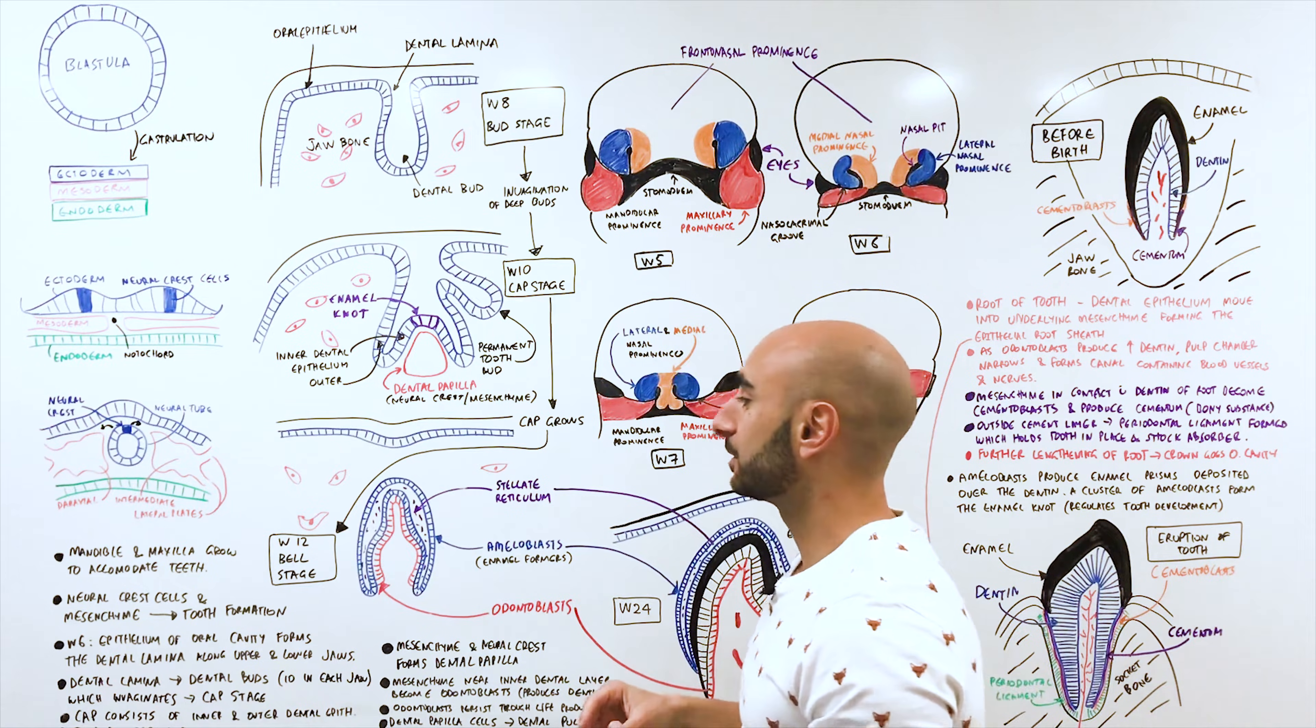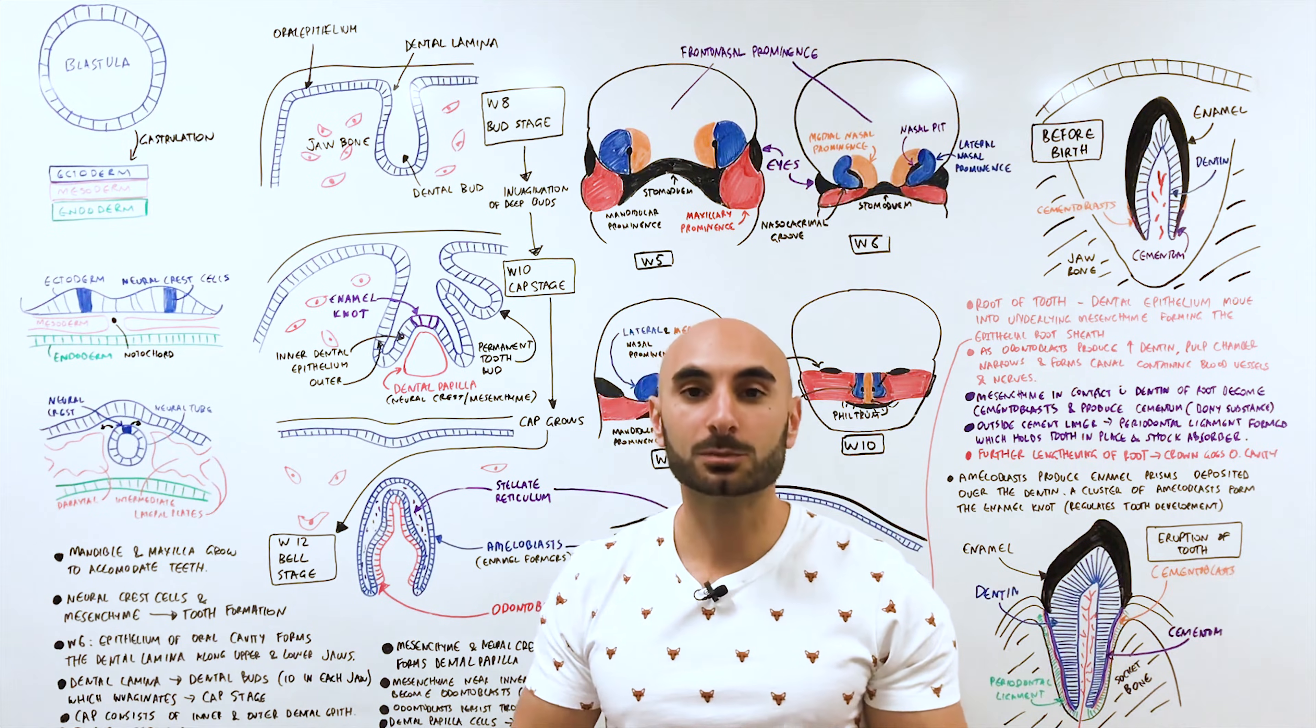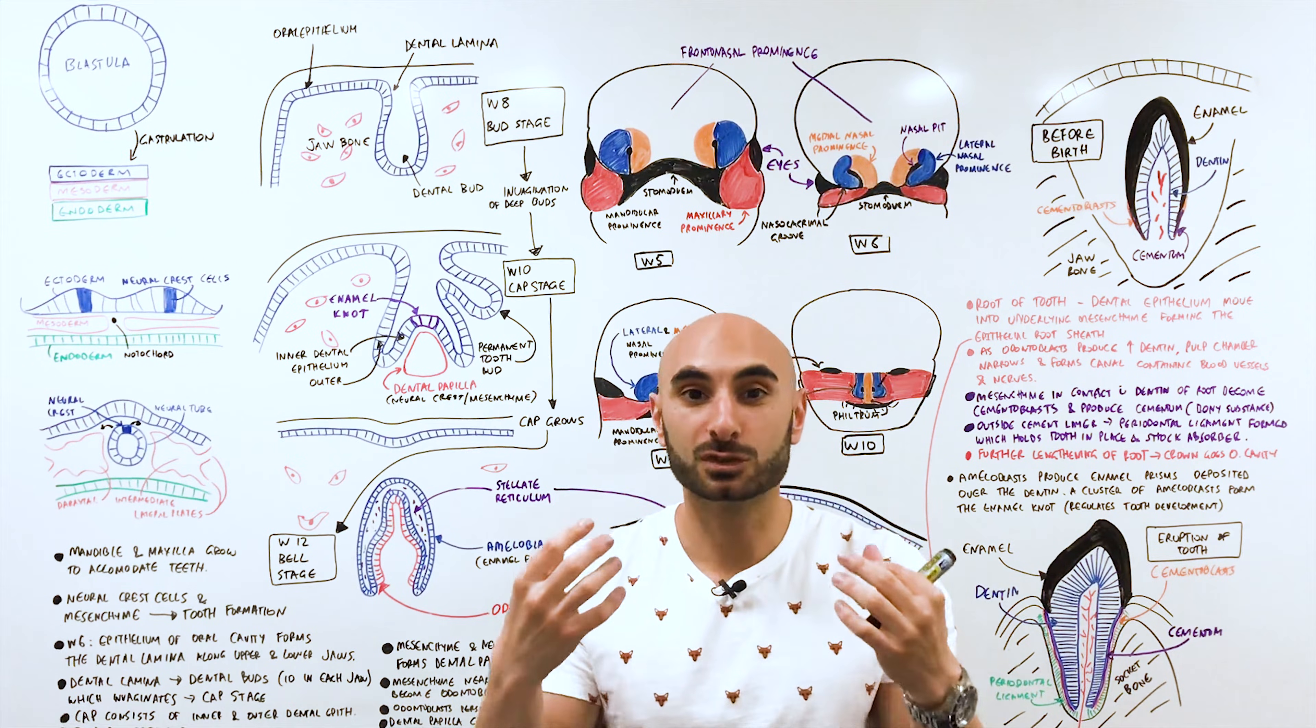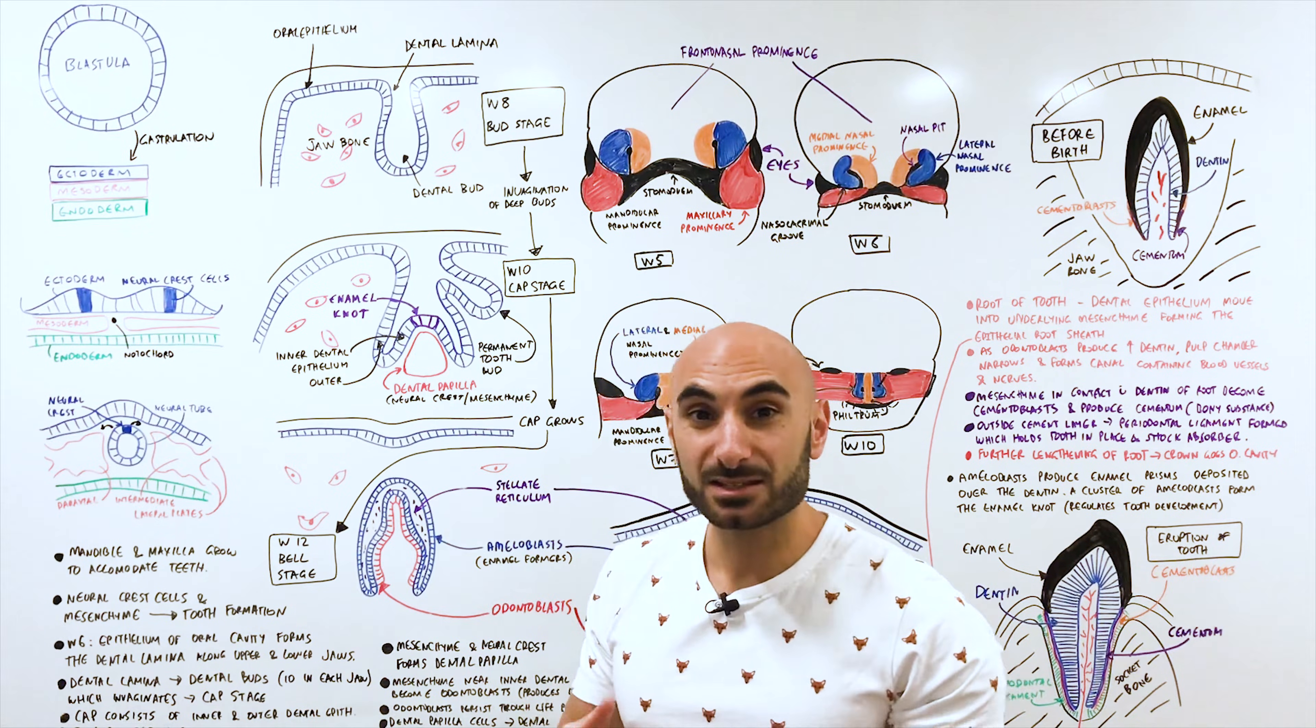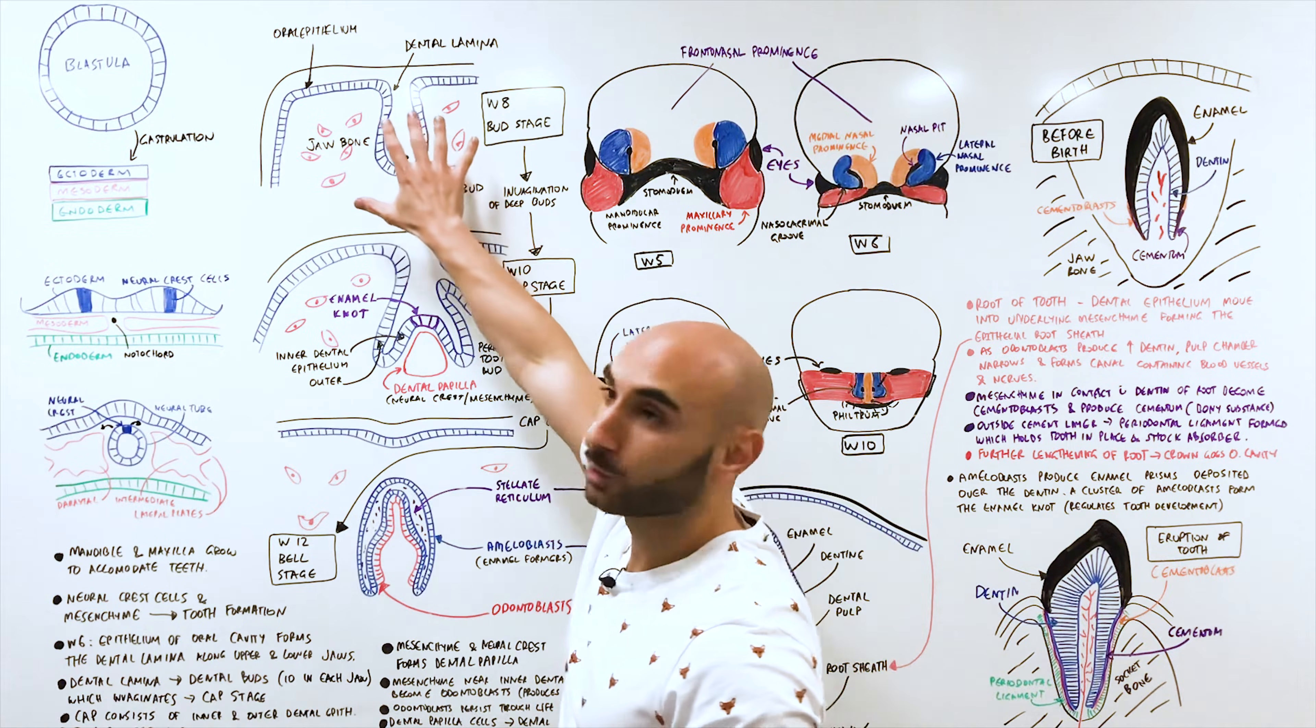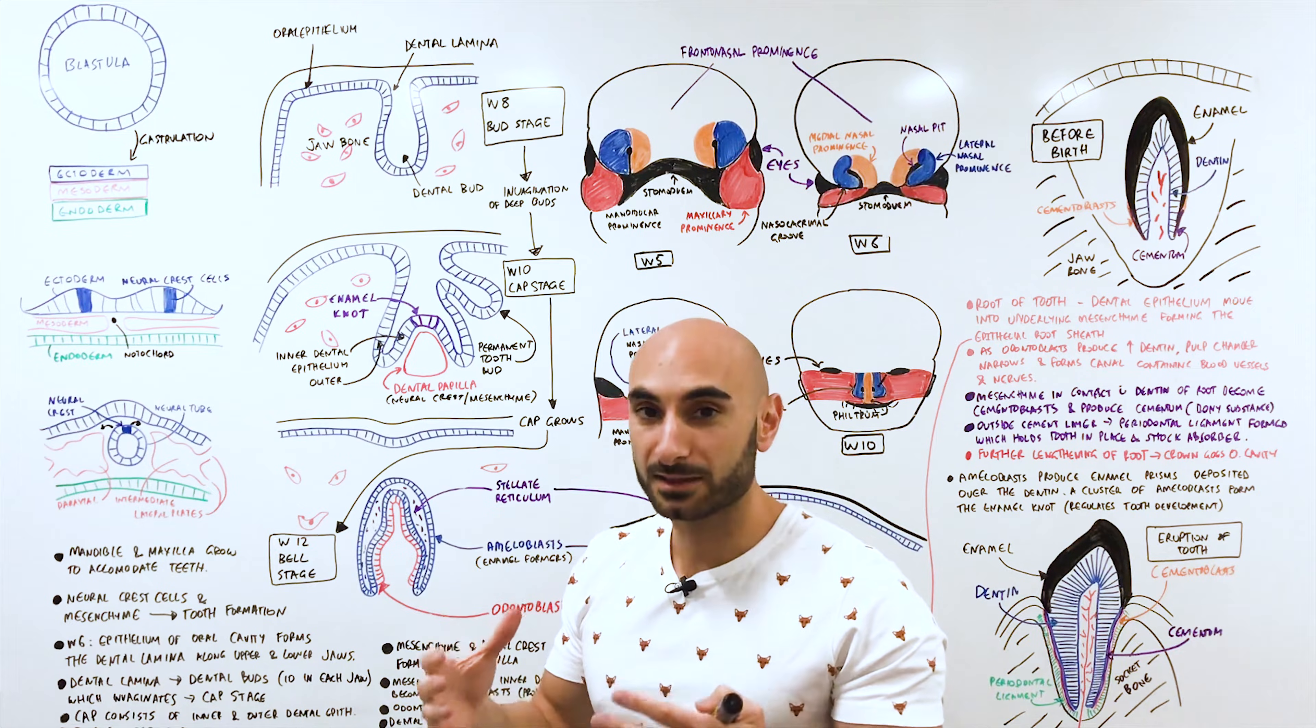Again we have the endoderm which eventually becomes a tube in itself. Let's start talking about the development of the teeth. In the previous video with embryology of the face we talked about how the sinuses contribute to the shape of the face, so does the jaw, the bones of the jaw. So the maxilla and the mandible, and these jaw bones accommodate the development of the teeth.